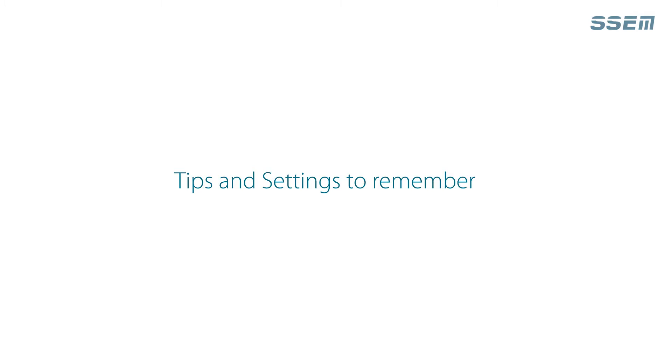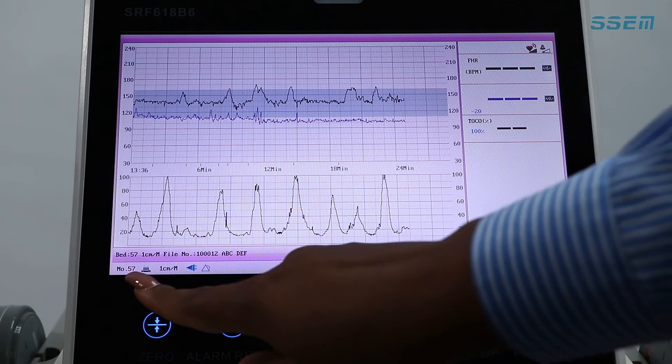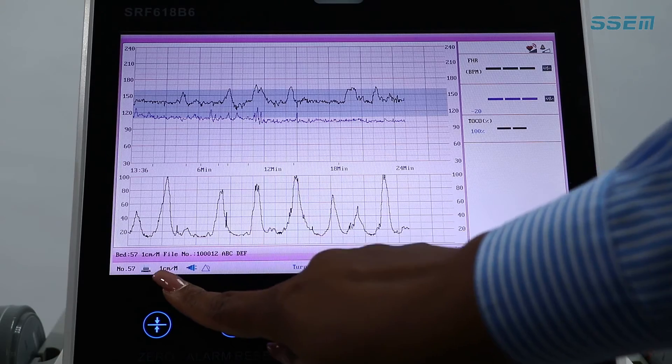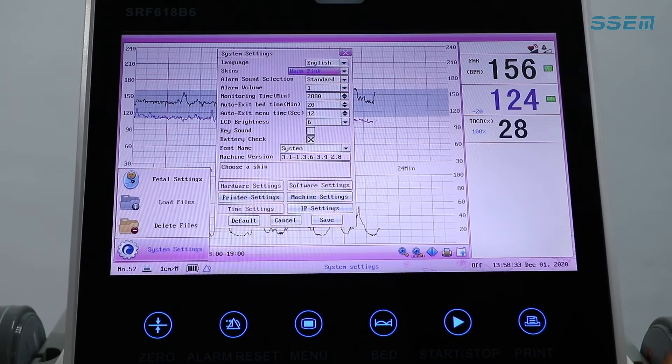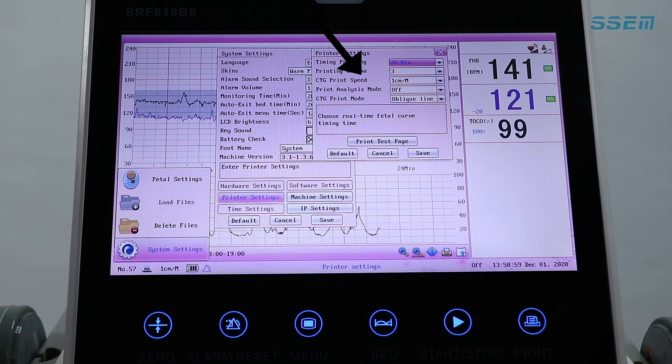Tips and settings to remember. Ensure that the CTG print speed is at one centimeter per minute. Follow this process. Press menu, system settings, printer settings, CTG print speed and set it to one centimeter per minute and save.